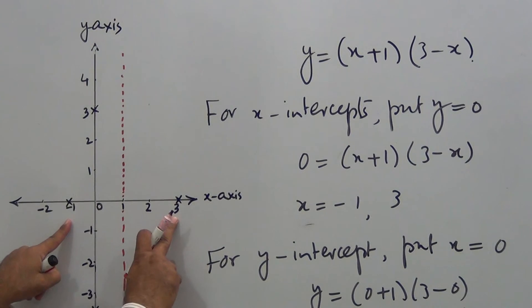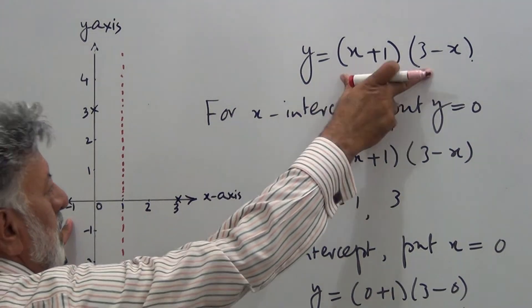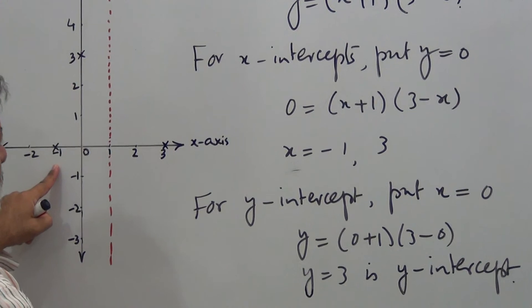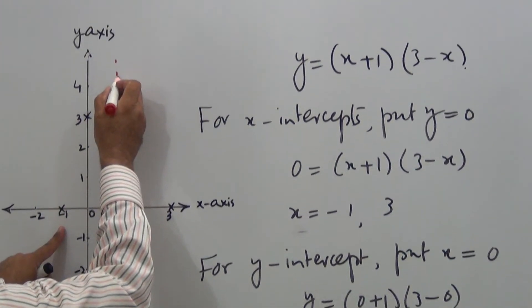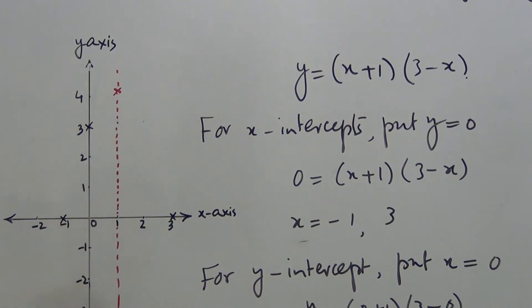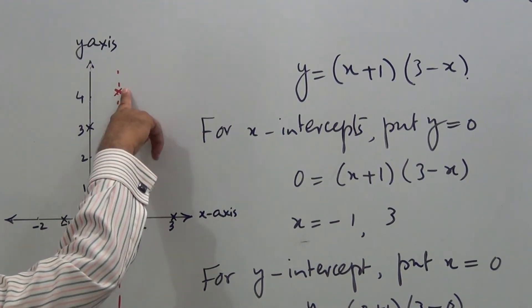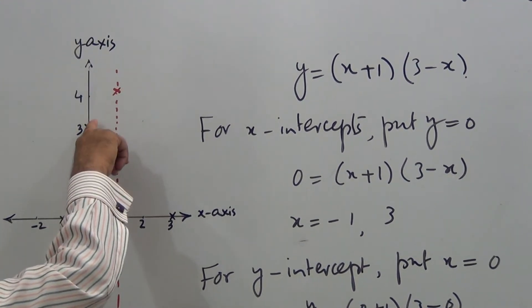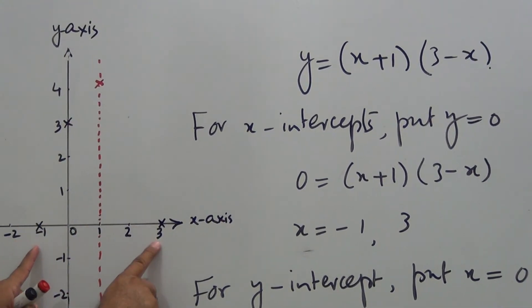Now when I put x = 1 in this expression, I get y = 4. So this is the point which is the maximum point. Now I have the maximum point, I have the y-intercept, I have the x-intercept.